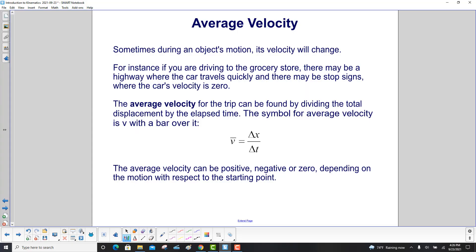Just like speed, sometimes during an object's motion, the velocity will change. For instance, if you're driving to the grocery store, there may be a highway where the car travels quickly, and there may be many stop signs when the car's velocity is zero. The average velocity for the trip can be found by dividing the total displacement by the elapsed time. The symbol for average velocity is V with a bar on it. And again, that's a similar equation to just instantaneous velocity, but in instantaneous velocity, this time period is very, very tiny. In this case, it can be any time and any displacement. Your average velocity can be positive, negative, or zero, depending on the motion with respect to the starting point.